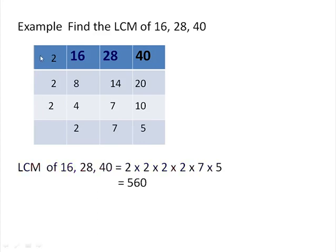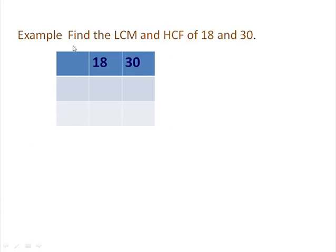While writing the LCM, we write the common factors on the left-hand side first in product form — 2 will be multiplied 3 times — then the uncommon factors 2, 7 and 5 are multiplied. So: 2 twos are 4, 4 twos are 8, 8 twos are 16, 16 sevens are 112, 112 fives are 560. Therefore, the LCM of 16, 28 and 40 is 560.